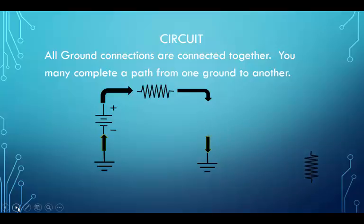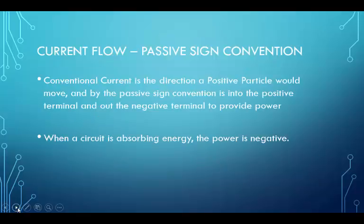If you remove an element, the current will not flow. Just as a reminder, current flow in the passive sign convention is used in order to simplify the mathematics and minimize error. Conventional current is the direction a positive particle would move and, by the passive sign convention, is always into the positive terminal and out of the negative terminal to provide power — this is a positive power. When a circuit is absorbing energy, the power will turn out to be negative.